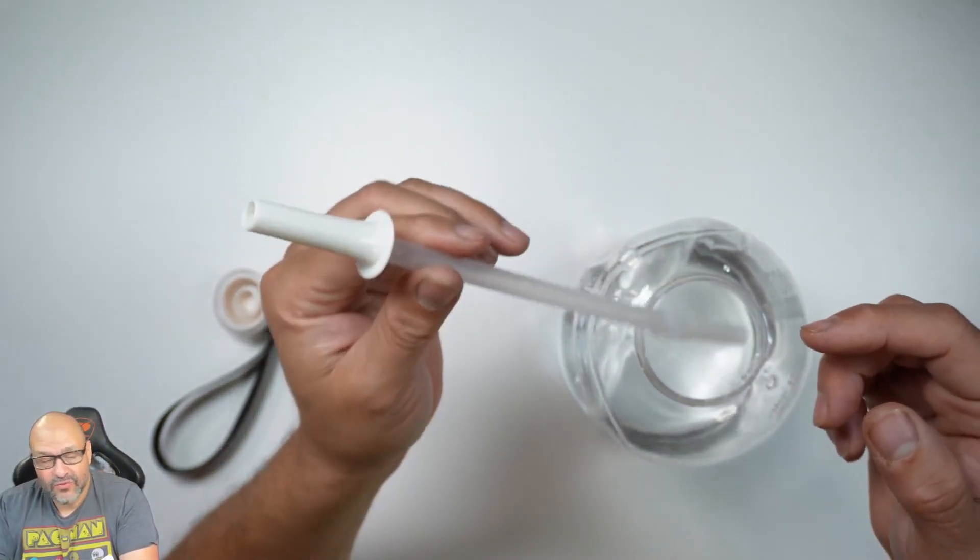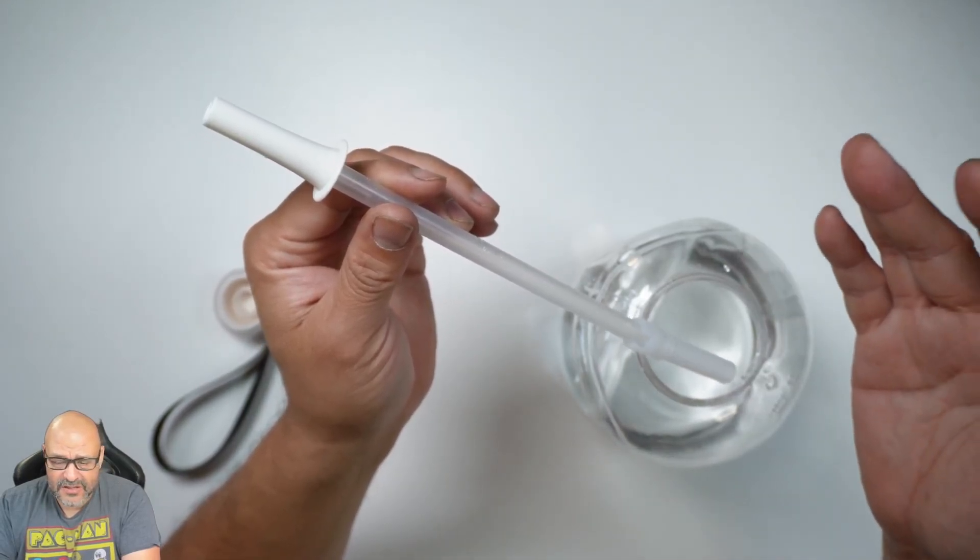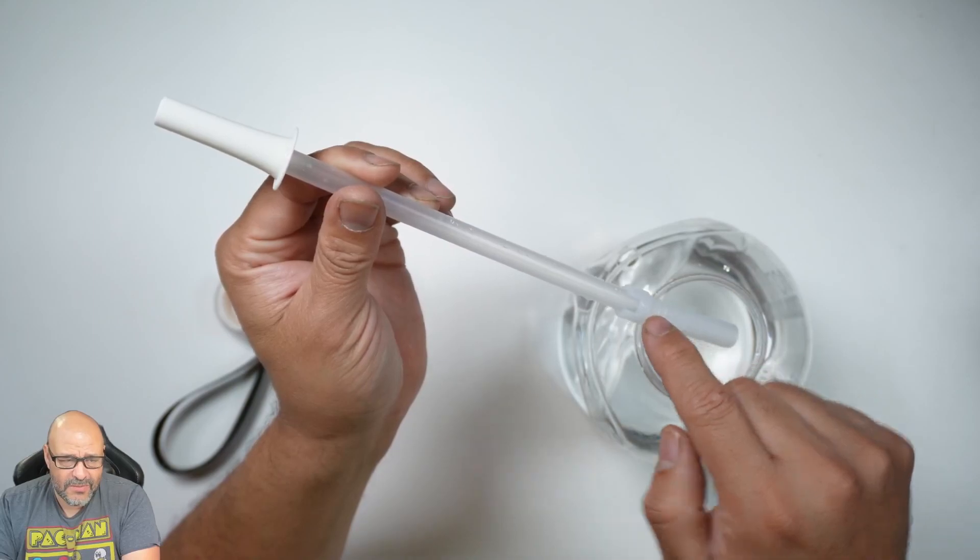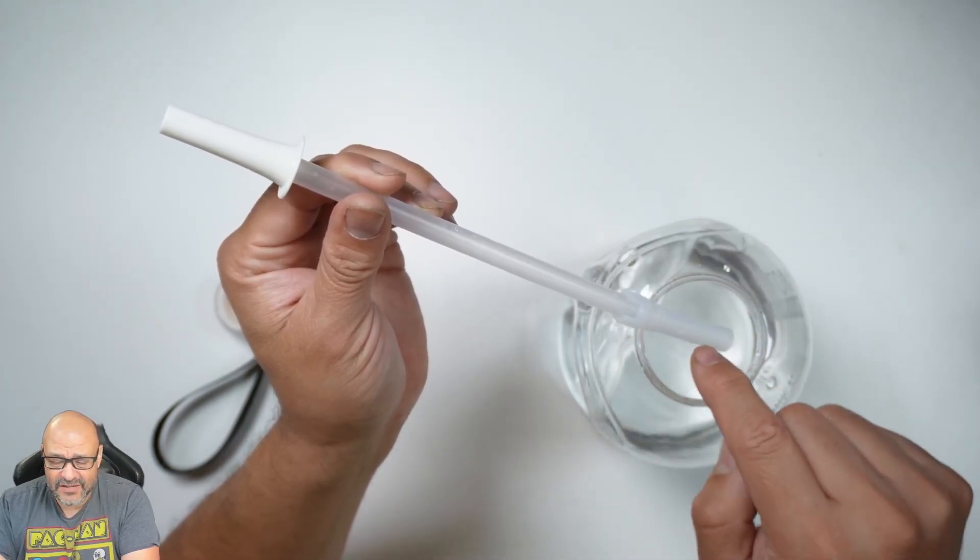Now, they do sell brushes to clean these, so I recommend you clean them once in a while. This is silicone, which means you can put it in the dishwasher, but you might lose the system because it's very small.